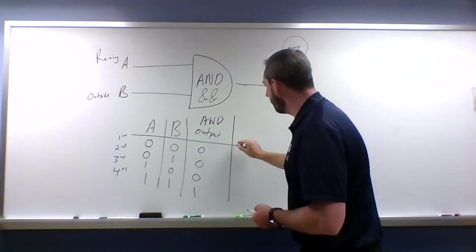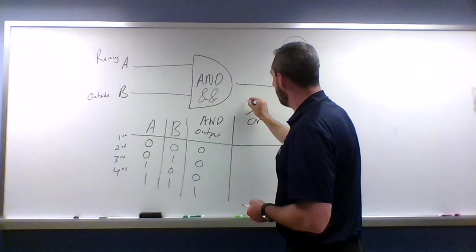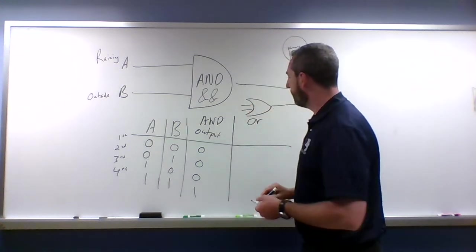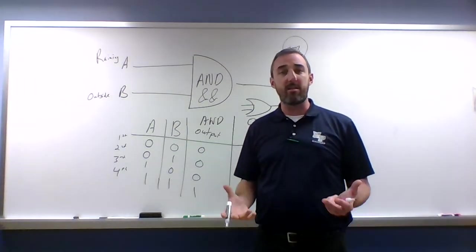There is also a thing called an OR gate. An OR gate looks like this—like a little Star Trek symbol on its side. An OR gate says, 'Are either of these things on?'